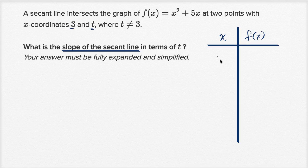So when x is equal to 3, what is f(x)? Well, it's going to be 3² + 5 times 3. This is going to be 9 + 15, which is 24.